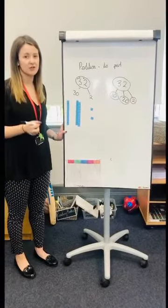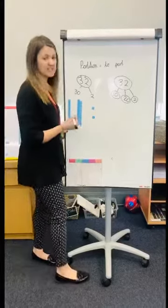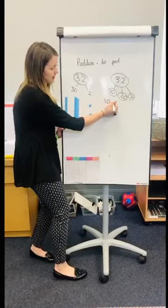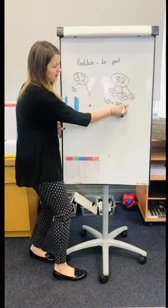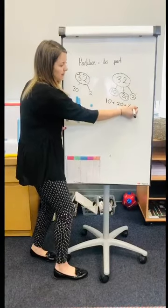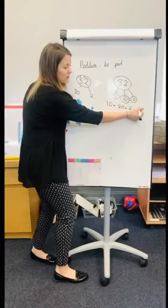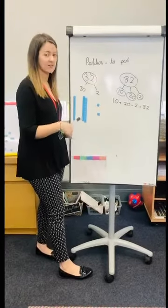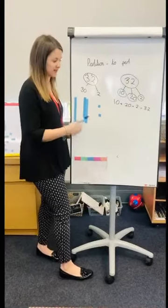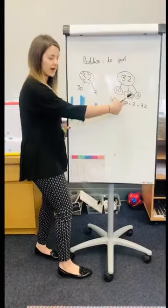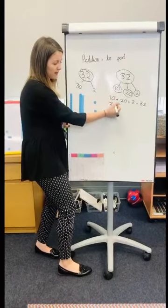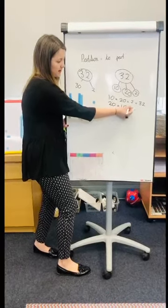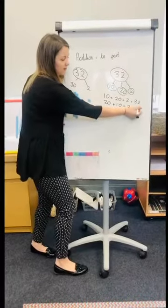Now what I'm going to do to show my understanding, next to it or underneath it, I'm going to write: 10 add 20 add 2 equals 32. And then I'm going to challenge myself to see if I can think of a different number sentence. This time I'm going to swap these around because it is commutative, and I'm going to do 20 add 10 add 2 equals 32.